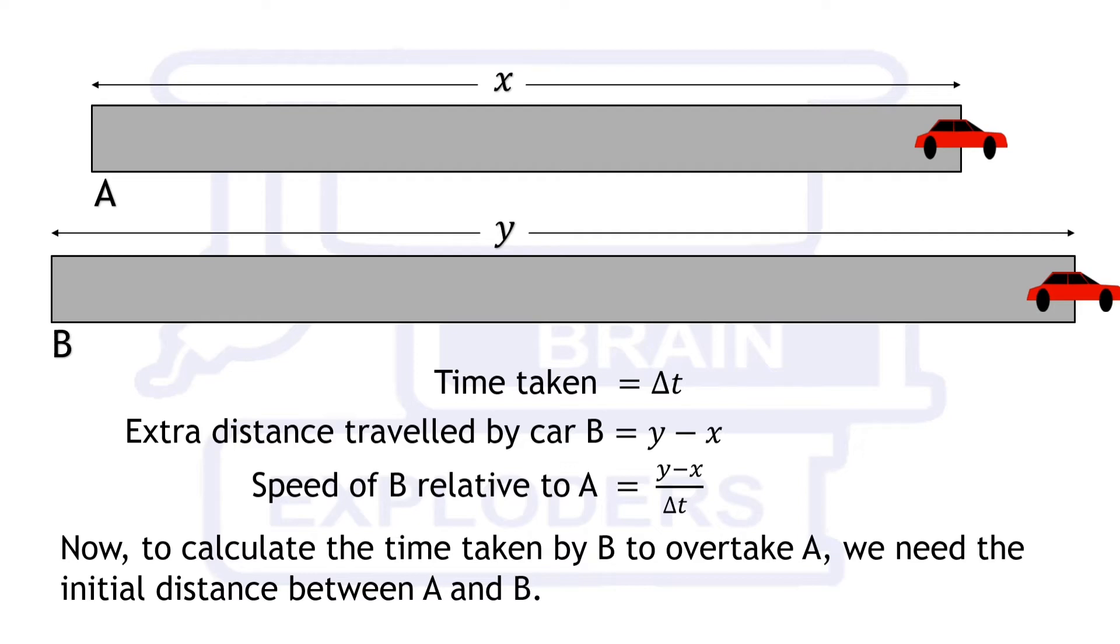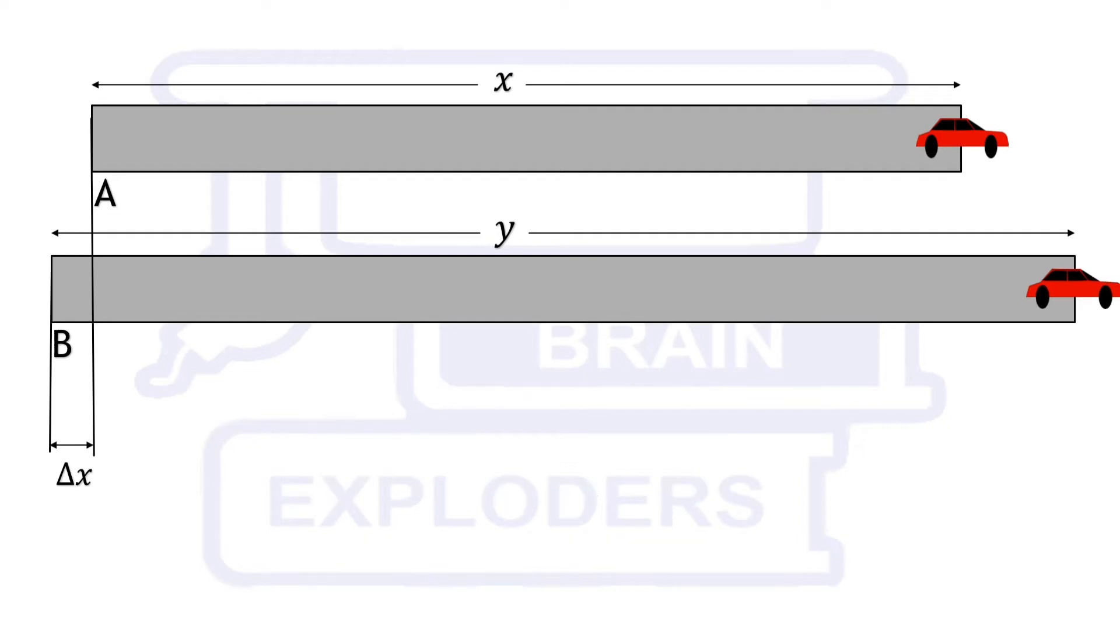To calculate the time taken by B to overtake A, we also need the initial distance between them. Let the initial distance be Δx. Now, time taken to overtake equals initial distance over relative speed.